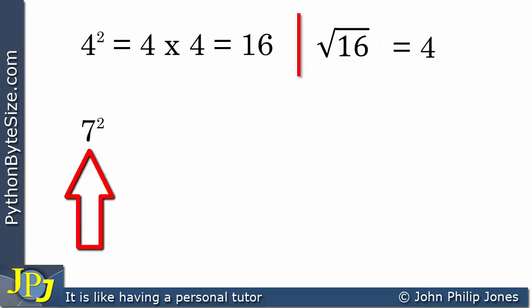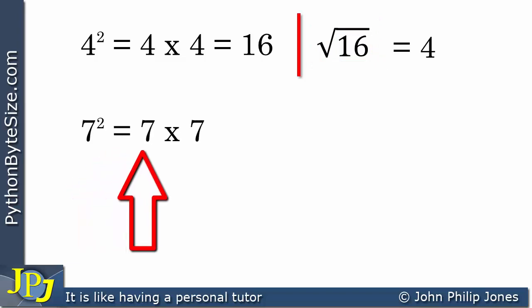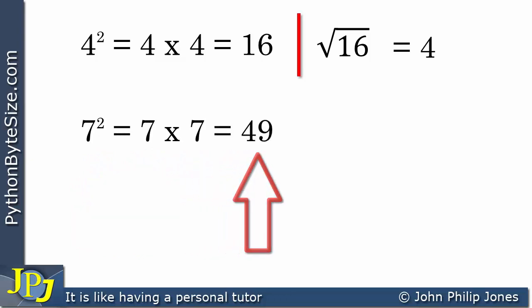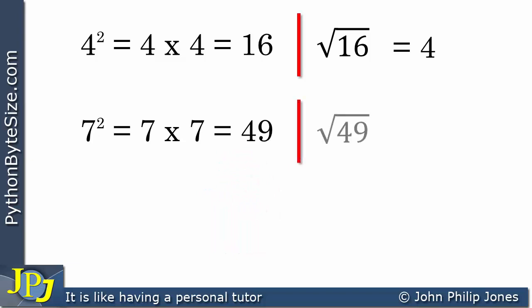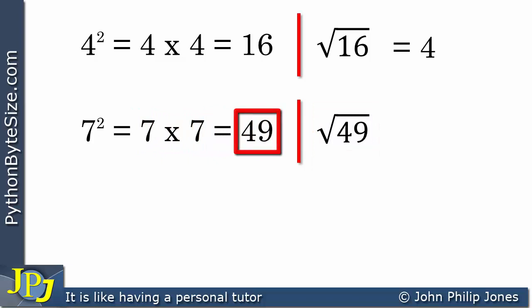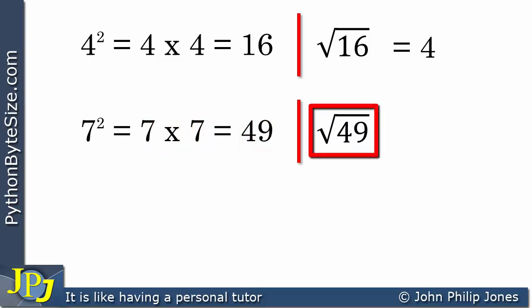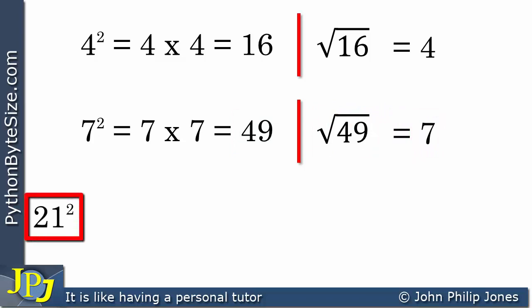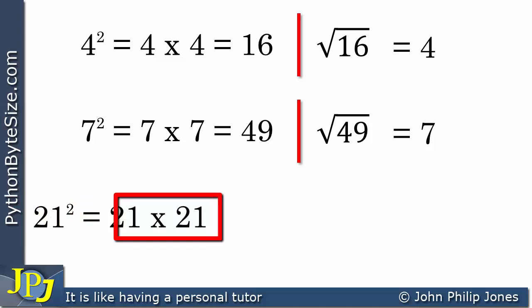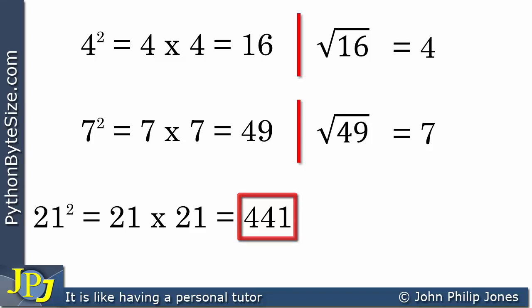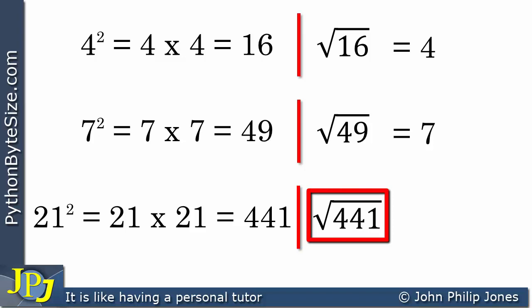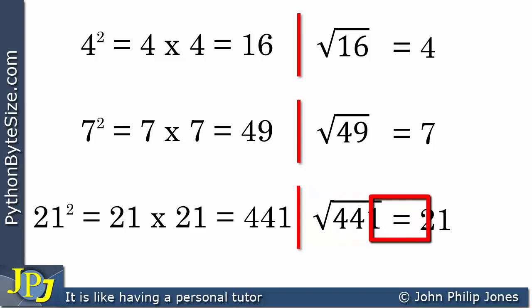If we look at another example: 7 squared is simply 7 times 7, which we know to be 49. Now if I was to ask what's the square root of 49, we are looking for a number such that when multiplied by another number with the same value we get 49. And of course 7 times 7 gave us 49, so the square root of 49 is clearly 7. In another example, 21 squared equals 21 times 21, which gives 441. And of course the square root of 441 is clearly going to be equal to 21.